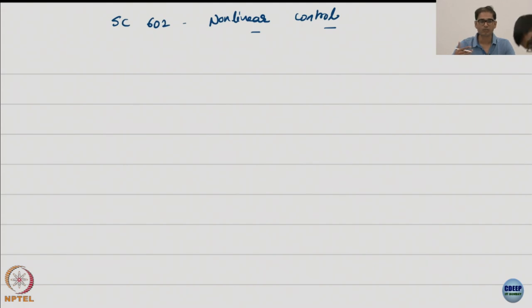Today we will look at the first formal design method. CLF was a tool used for design, but not a formal method itself. As expected at the end of midterm, we typically start with design aspects. Today we start with backstepping, and I'm going to write a little bit.